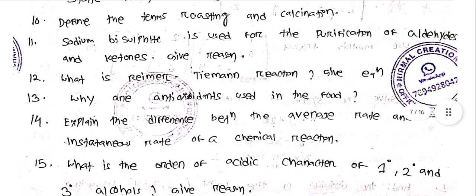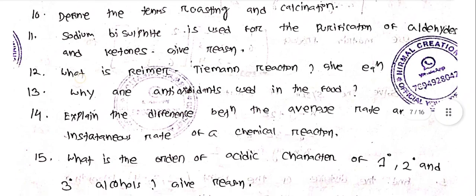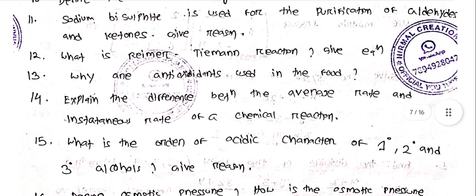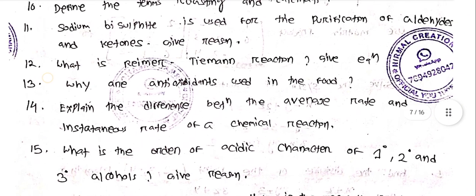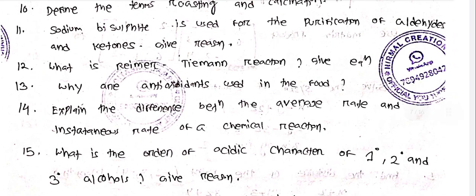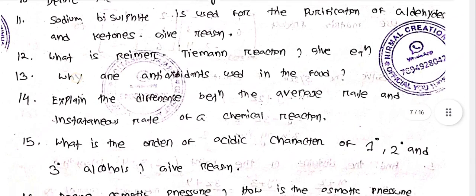Define the terms roasting and calcination, and explain the difference between roasting and calcination. Sodium bisulfate is used for the purification of aldehydes and ketones. Give an example.